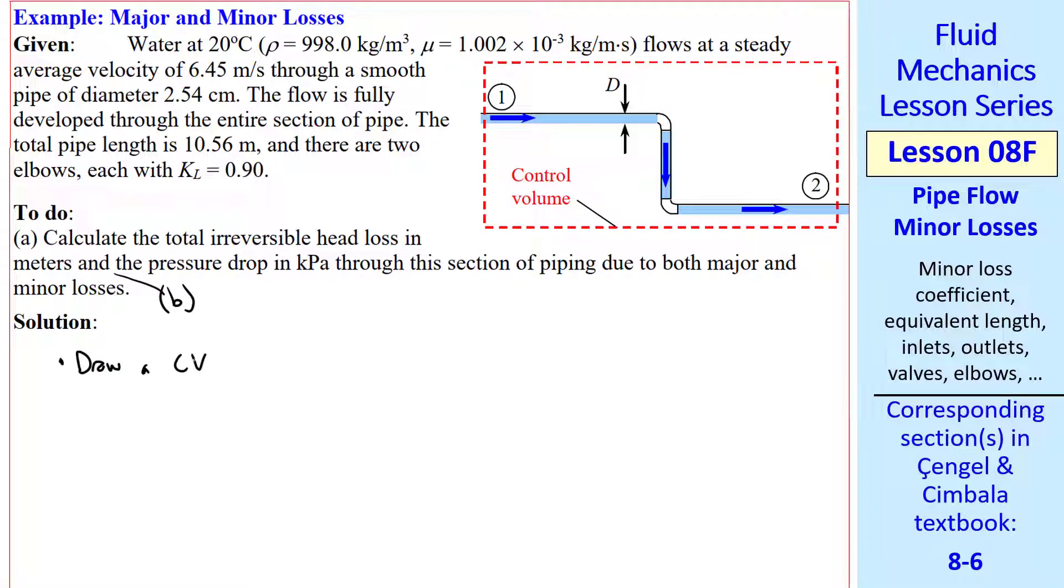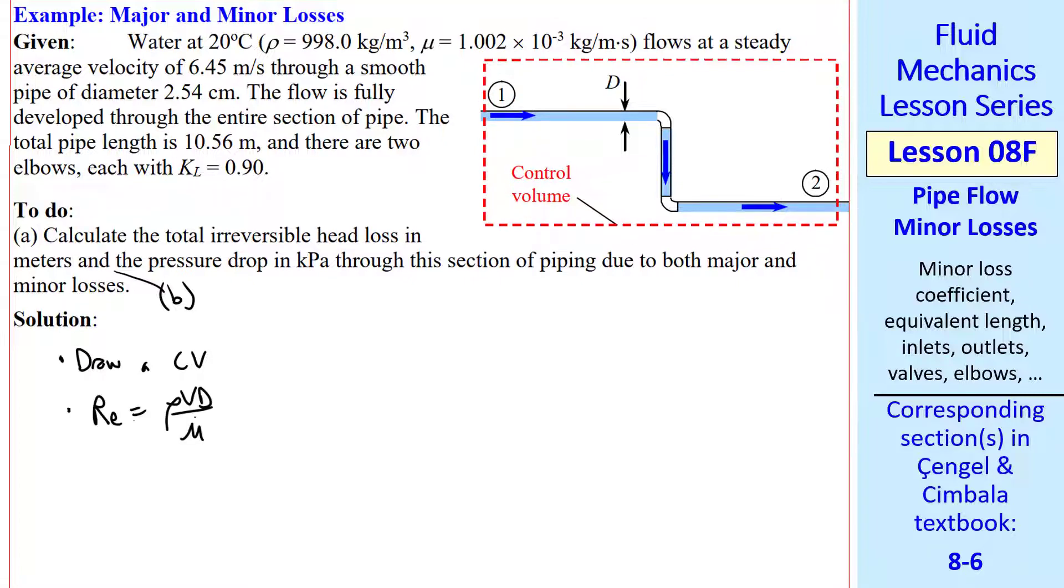The first step is to draw a control volume, which I already did, slicing through 1 and 2. For the major losses, we'll need to calculate the Reynolds number, which is rho Vd over mu.